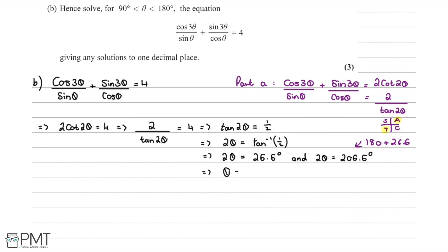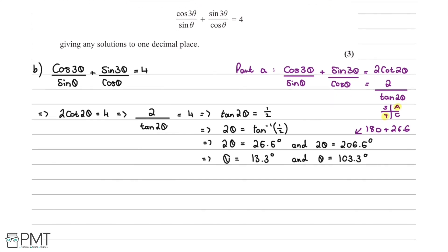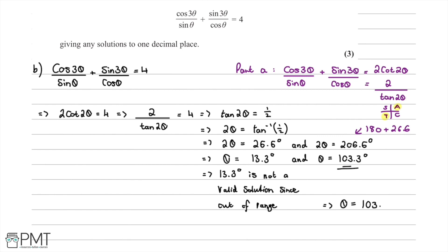Dividing by 2 gives θ = 13.3° from the first solution and θ = 103.3° from the second. Since θ must be between 90° and 180°, 13.3° is out of range and is not valid, but θ = 103.3° is a valid solution.